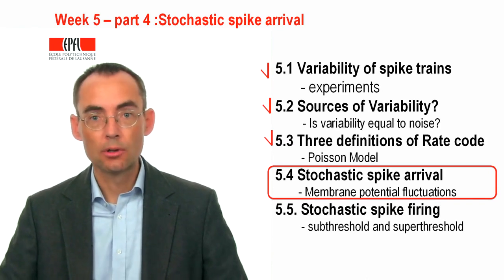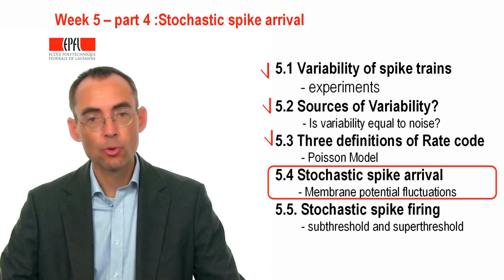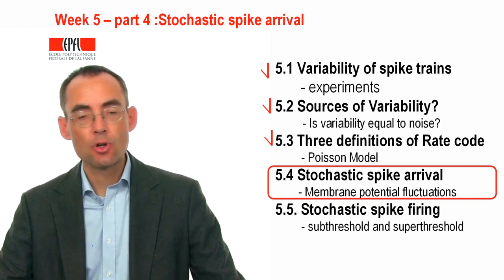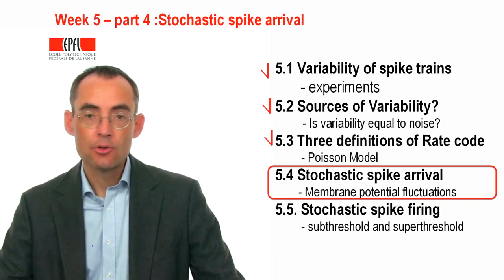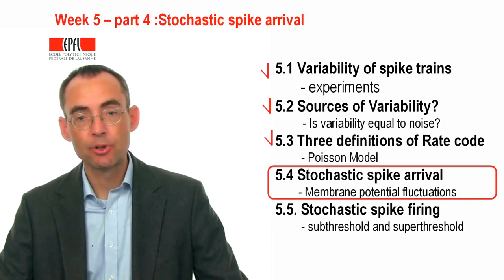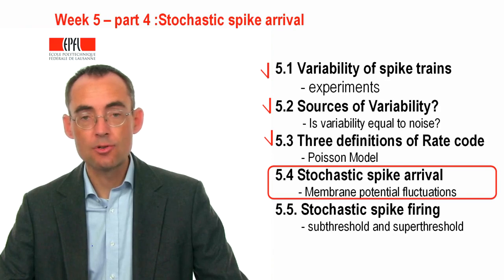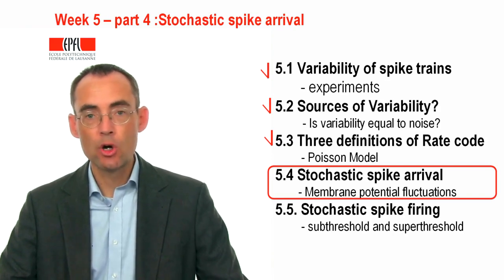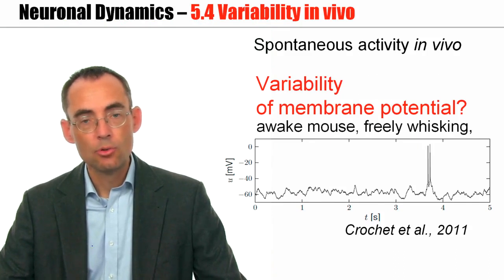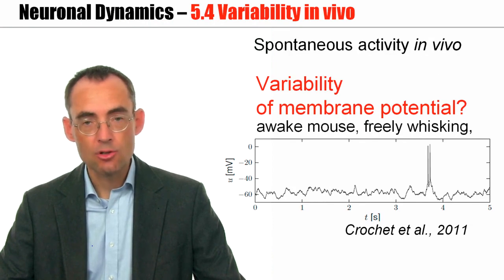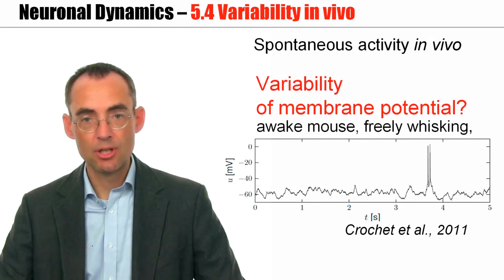Welcome to Part 4 of Week 5 of the class Neuronal Dynamics. In the previous lectures of this week, I focused on experimental data showing fluctuating membrane potentials and fluctuations of spike timing. We now turn to a first model that should allow us to explain the observed fluctuations of the membrane potential.